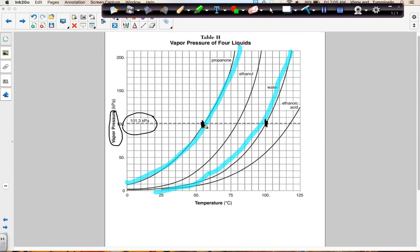So propanone has a lower boiling point than water at that pressure, because its temperature that it lines up with is lower. That would mean that propanone has weaker intermolecular forces, and that water has stronger intermolecular forces when compared to each other.